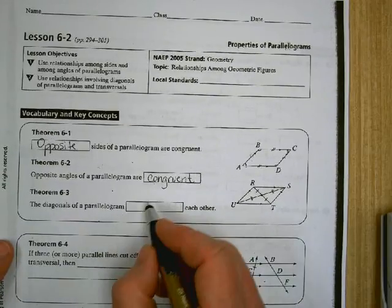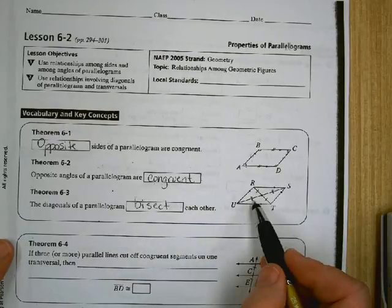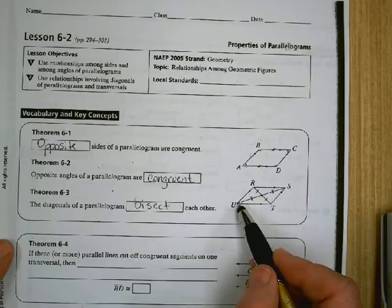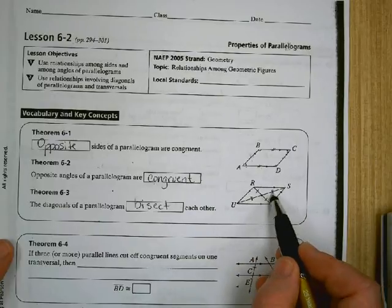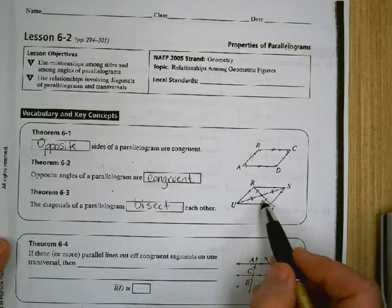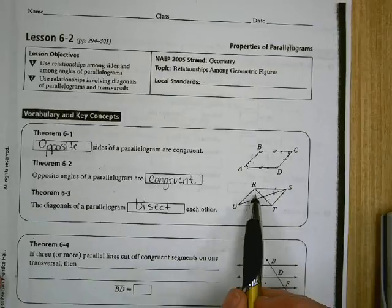The diagonals of a parallelogram bisect each other. So when those diagonals meet up in the middle, it divides US into two congruent segments and it divides RT into two congruent segments. Now, don't confuse that with me saying the diagonals are congruent. That's not what happens. The diagonals get cut into two congruent parts.